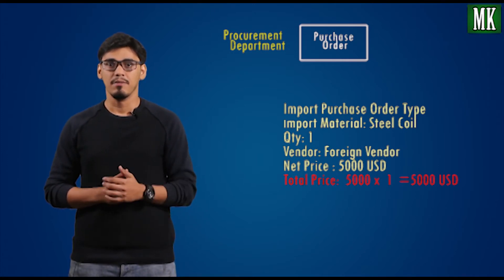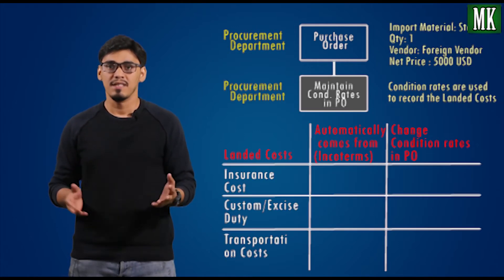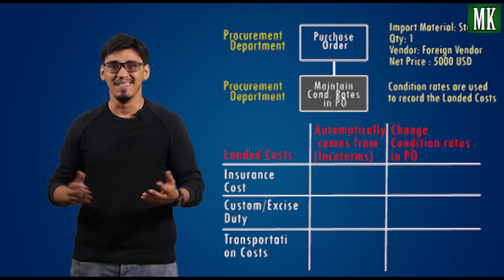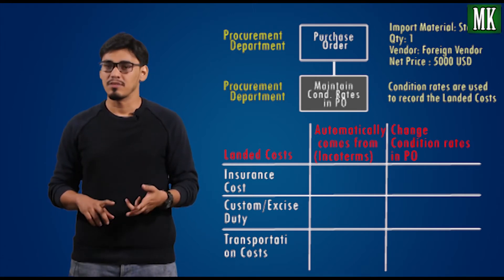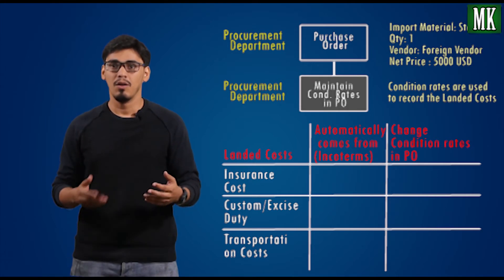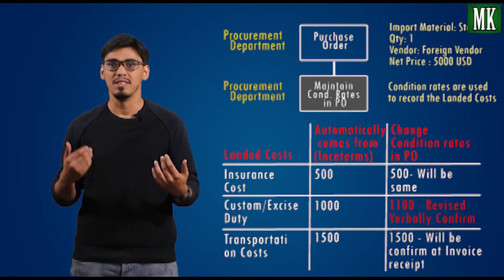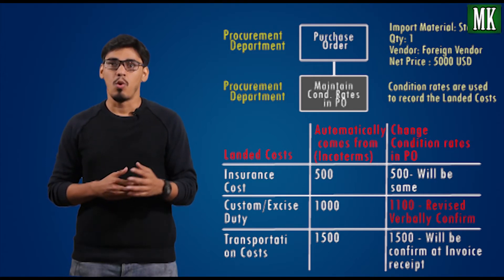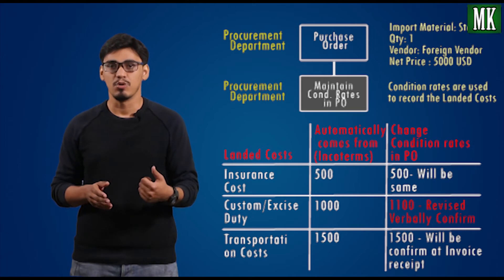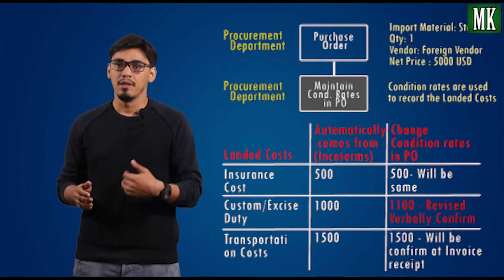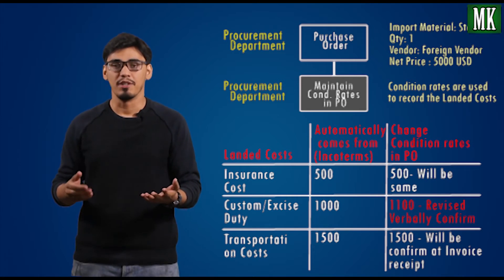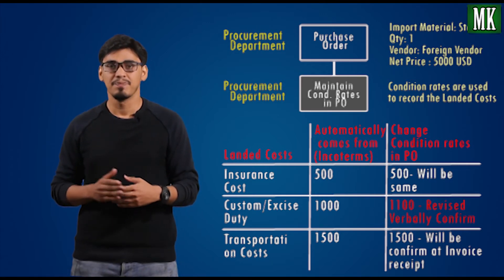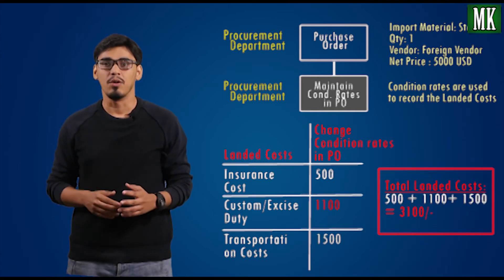The second step is to maintain the condition rate. The condition rates are used to record the landed cost for the import material, such as insurance cost, custom duty, or transportation cost. All these costs are recorded on the basis of provision since we don't have the actual price for them at the time of purchase order creation or goods receipt. These are calculated on the basis of settings done in Inco terms and picked up into the purchase order. You can change the price if you want — in this example I'll change the custom duty from 1000 to 1100, so the total landed cost changes from 3000 to 3100.